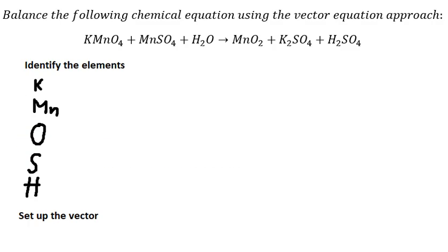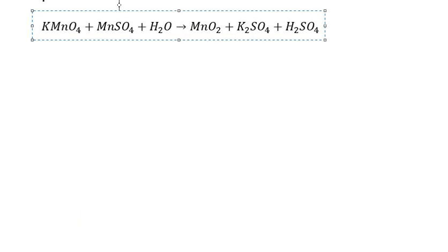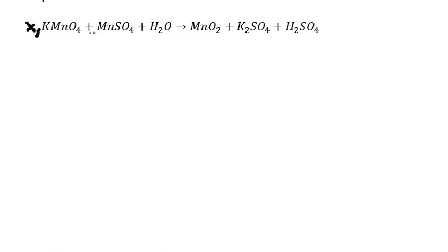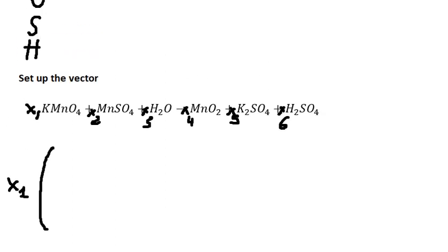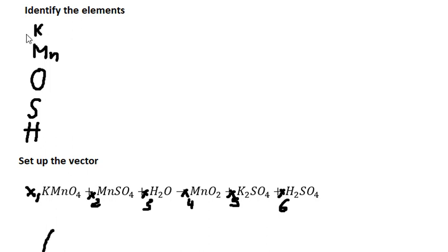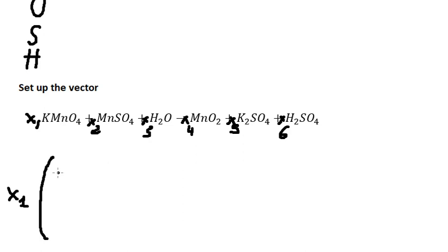Next we need to set up the vectors — S1, S2, S3, and so on. So for S1, we have one K, one Mn, four oxygen, we don't have H and hydrogen, so we put zero and zero. So S1 is: 1, 1, 4, 0, 0.